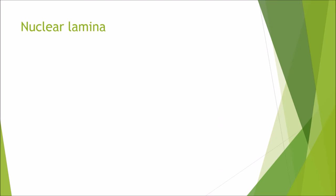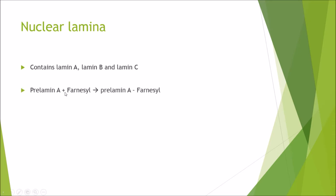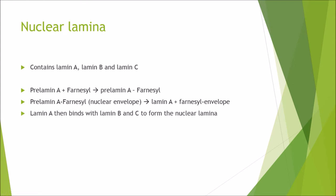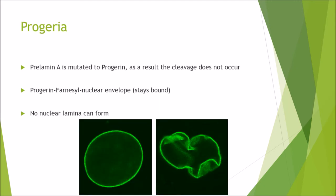Progeria results from a problem with the nuclear lamina. Normally, the nuclear lamina contains three types of lamins: lamin A, lamin B, and lamin C. Prelamin A first binds to farnesyl, forming a complex that then binds to the nuclear envelope. Farnesyl stays attached to the envelope while releasing pure lamin A, which then binds to lamin B and C to form the nuclear lamina. In progeria, however, prelamin A is mutated to progerin. As a result, the cleavage does not occur, so progerin and farnesyl are permanently bound to the nuclear envelope and no nuclear lamina can form. A normal cell nucleus has a perfect spherical shape, but those with progeria have a completely distorted nucleus, causing the symptoms mentioned.